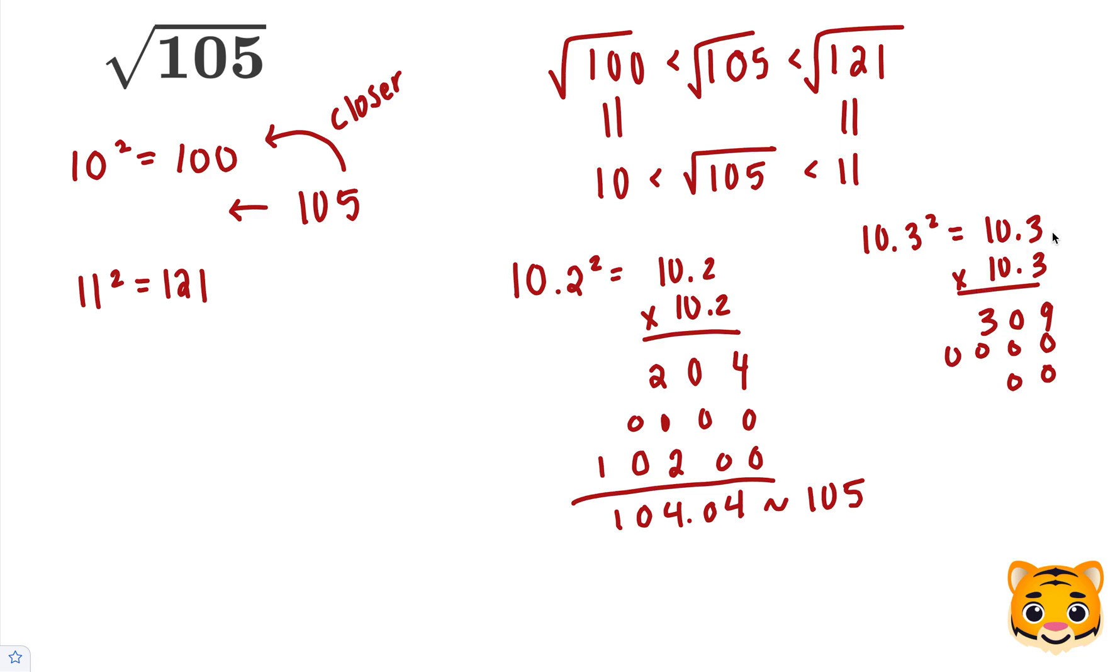1 times 3 is 3, 1 times 0 is 0, and then 1 times 1 is 1. Adding these together, we get 106.09. So we can see that 104.04 is closer to 105, so that'll be our approximated choice.